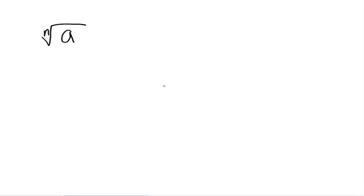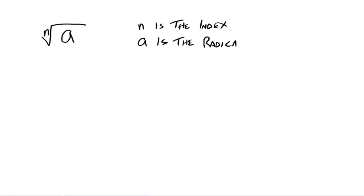This is called radical notation. The n is called the index — so n is the index of the radical. A is the radicand, so whatever is underneath the radical sign is called the radicand. That symbol is just called the radical sign. The whole thing is called a radical.